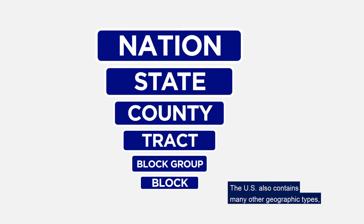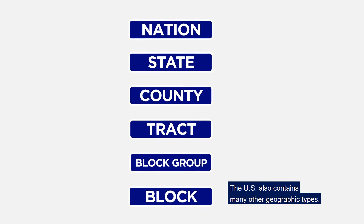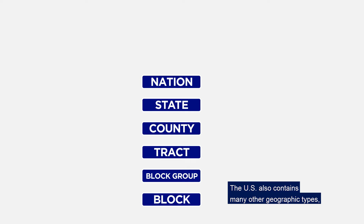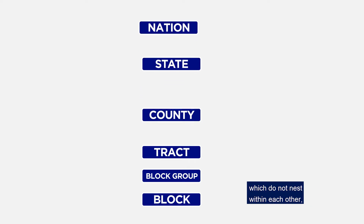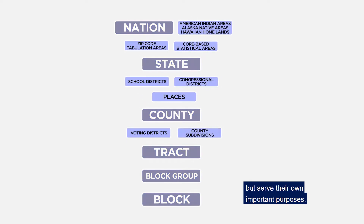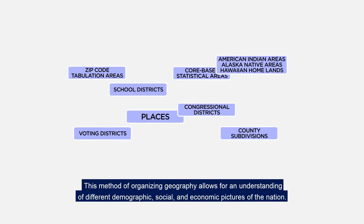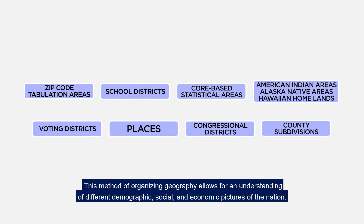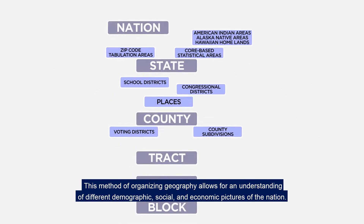The U.S. also contains many other geographic types which do not nest within each other but serve their own important purposes. This method of organizing geography allows for an understanding of different demographic, social, and economic pictures of the nation.